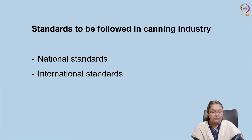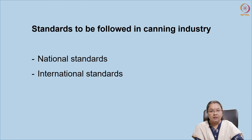Before we go into further details, let me brief about what we had discussed in the previous sessions. We had discussed about different canning processes in detail, step by step. We also seen how the canning process differs from item to item, that is product-wise. And we discussed about the pre-processing machineries and tools generally used in the seafood industry, and we ended up with additives — different types of additives, their definition and importance in the seafood industry.